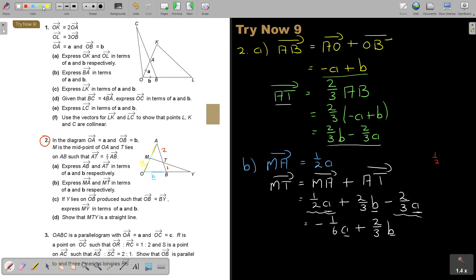Now, we can go to number C. If Y lies on OB. I don't know. It's just going to lie here. OB. Oh. Now, there it is. And OB produced. So it means extended. Such that OB equals BY. So it means that these two are equal. Express MY. So, meaning, if this is b, this is also b. So OY will be 2b.